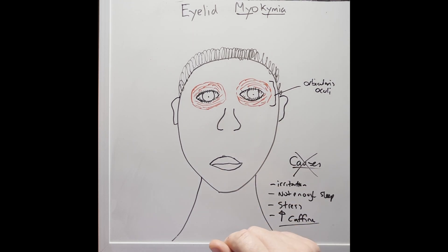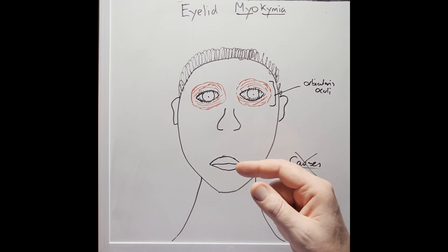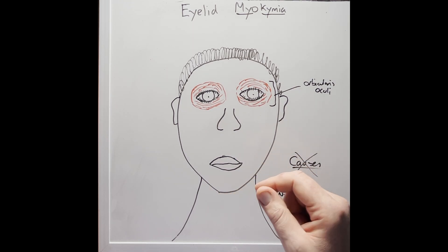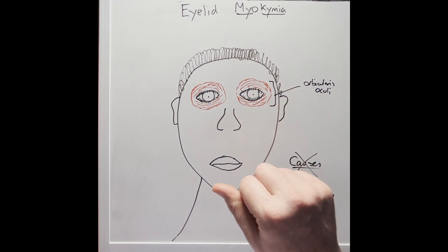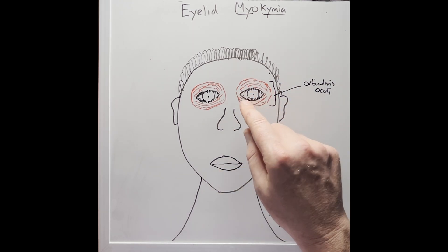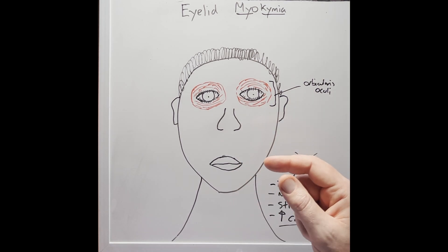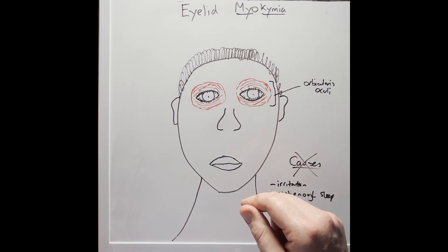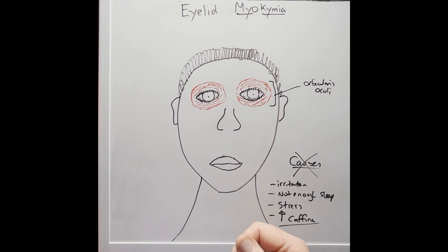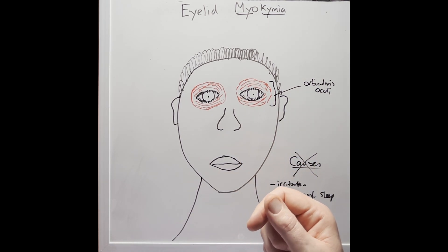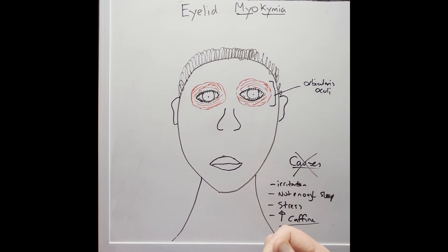If these eye twitches persist or are accompanied by other symptoms such as facial twitching or eyelid drooping, it would be good to go and see your family physician. But in most cases they are benign and will go away without any medical intervention.